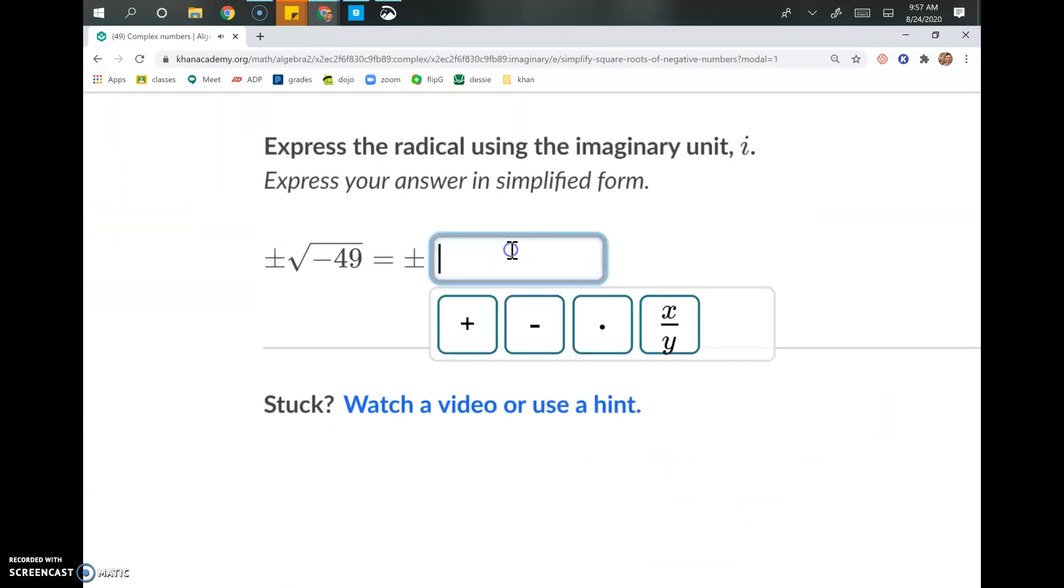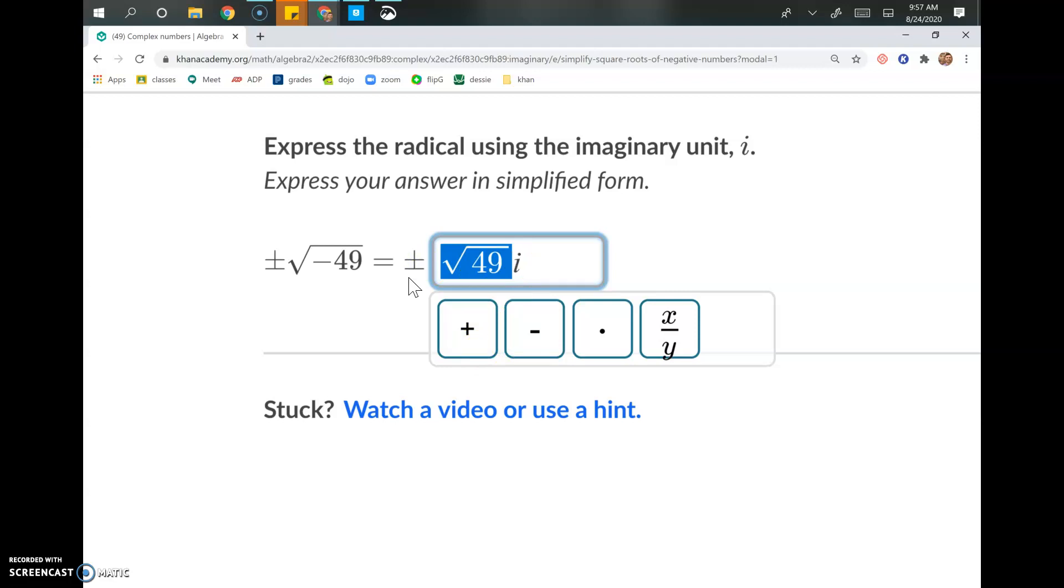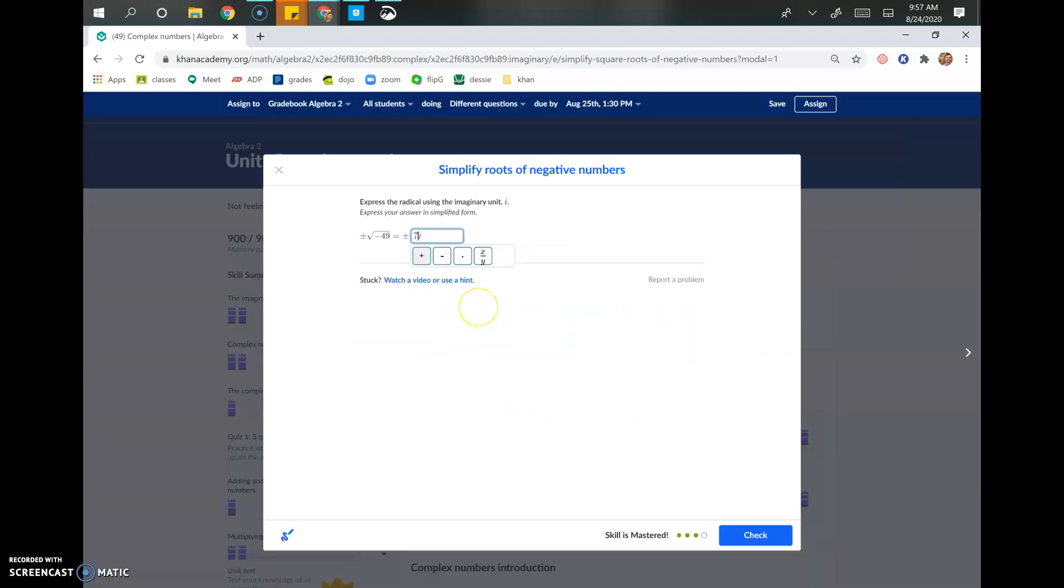Oh mama, oh mama. All right, so we've got the square root of negative 49. If you're looking at 49, you're like, hey dude, the square root of 49 is 7. Yeah, you're right. It's a perfect square. So your answer is 7i. Got lucky with a perfect square. Boom boom, and that is how you simplify roots of negative numbers.